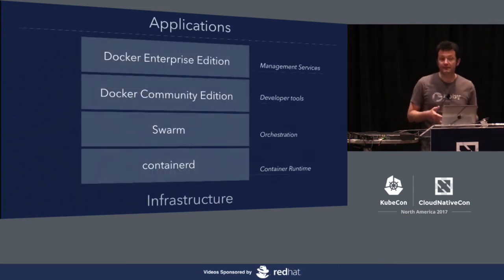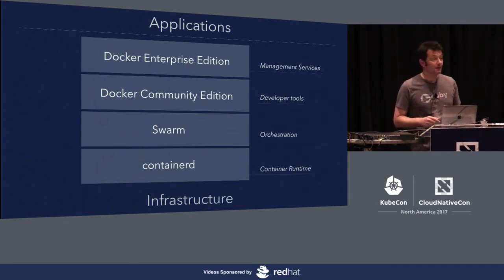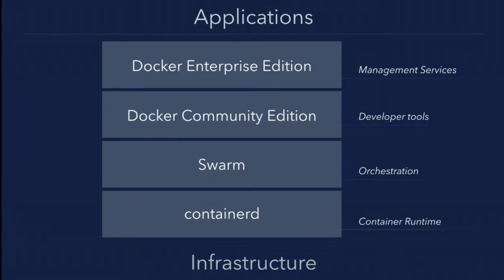If we look at the details, there are four layers in Docker. On top of infrastructure, you have the core container runtime called ContainerD — that's one of the key pieces of the Moby project. We announced ContainerD 1.0 yesterday after one year of work. On top of that, you have orchestration, done with a component called Swarm.